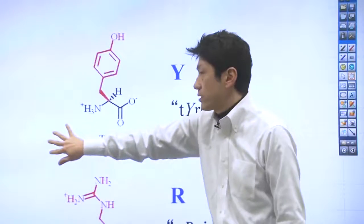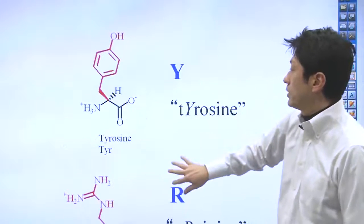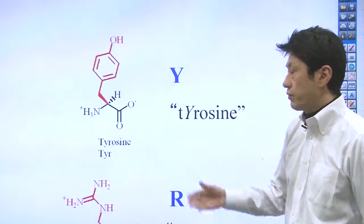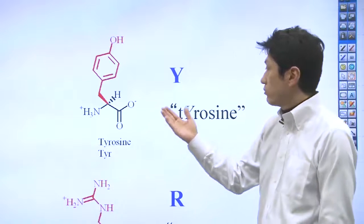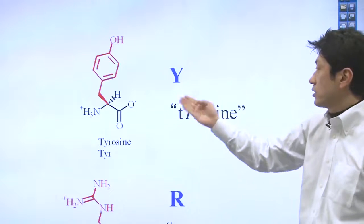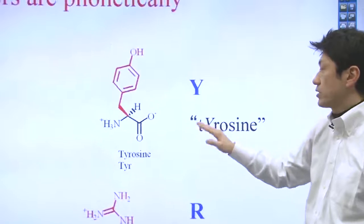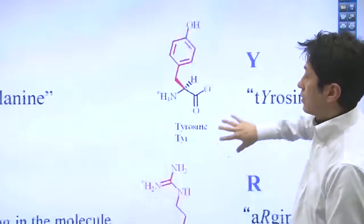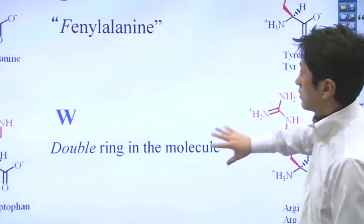Look at tyrosine here. Tyrosine has an aromatic structure right here as well. We use T for threonine. That's why we can't use T. We use Y for tyrosine. But tyrosine, Y, is phonetically suggestive.